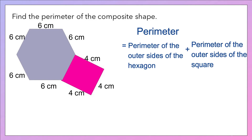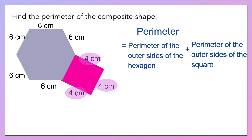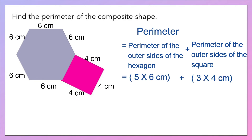You can also use this method to find the perimeter: perimeter of the outer sides of the hexagon plus the perimeter of the outer sides of the square. The number of outer sides of the hexagon is 5 and the number of outer sides of the square is 3. So 5 multiplied by 6 cm plus 3 multiplied by 4 cm gives 30 cm plus 12 cm, and the answer will be 42 centimeters.